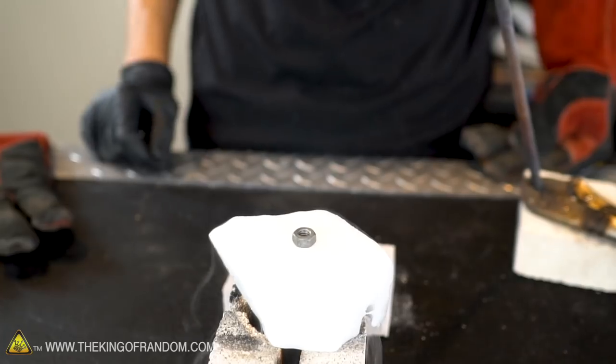All right, we've got a little metal nut here, and we're just going to melt that right on the dry ice. Molten metal does a pretty good job of carving right through this solid carbon dioxide. Let's give it a chance.